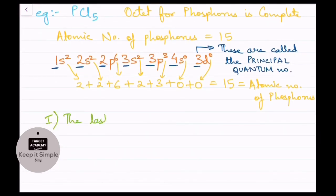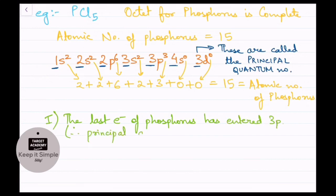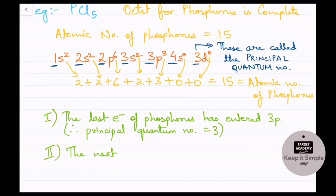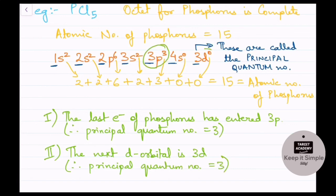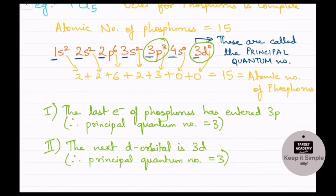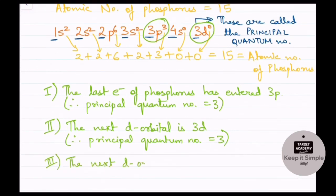How do you find out if P in PCl5 has a vacant d orbital? The last electron of phosphorus has entered the 3p orbital. After that there are no electrons in any other orbitals. So the principal quantum number is 3. The next d orbital after 3p is 3d, which also has principal quantum number 3. That 3d orbital is empty — it has zero electrons.